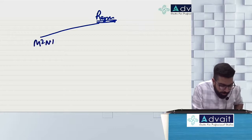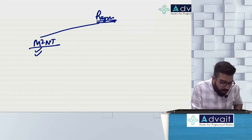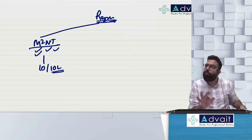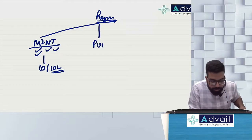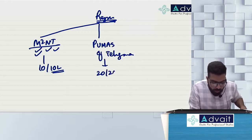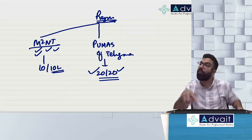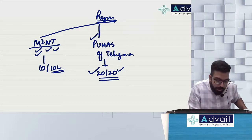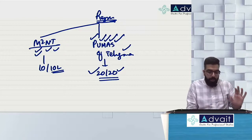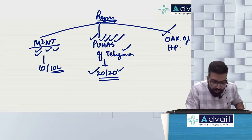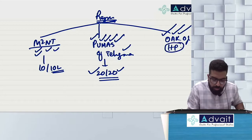There is M²NT — Manipur, Mizoram, Nagaland, and Tripura. For them, the limit is 10 lakh for goods, 10 lakh for services, and supplier of goods plus services. The second registration limit is PUMASOT — Pondicherry, Uttarakhand, Meghalaya, Arunachal Pradesh, Sikkim, and Telangana — for them, the supplier of goods limit is 20 lakh, supplier of services also 20 lakh, and supplier of goods plus services also 20 lakh. The last one is OAKH — Other states, Assam, Jammu and Kashmir, and Himachal Pradesh.